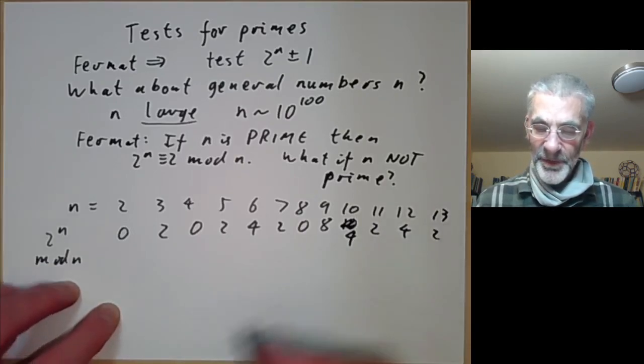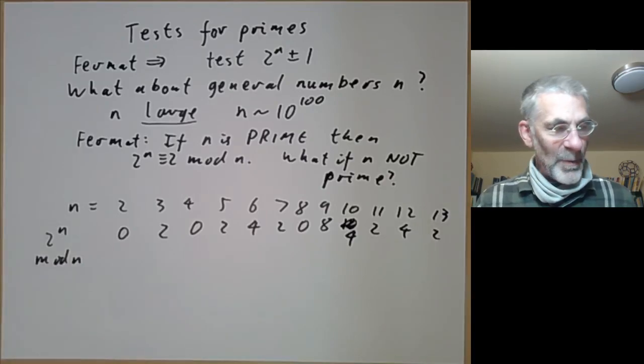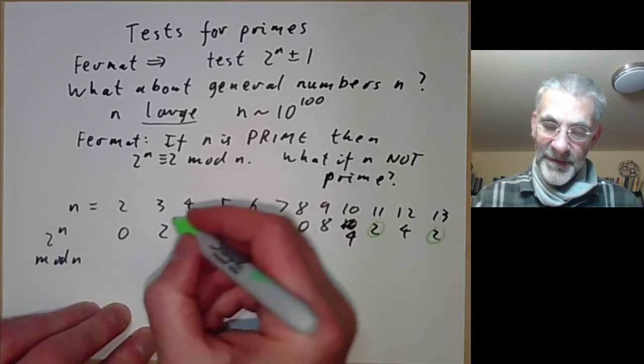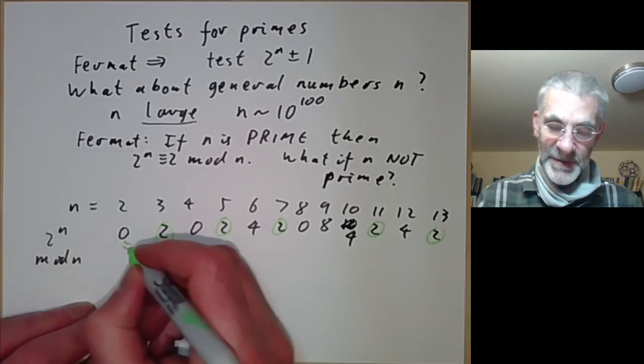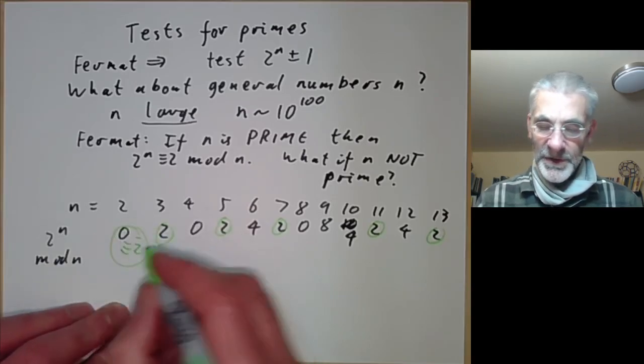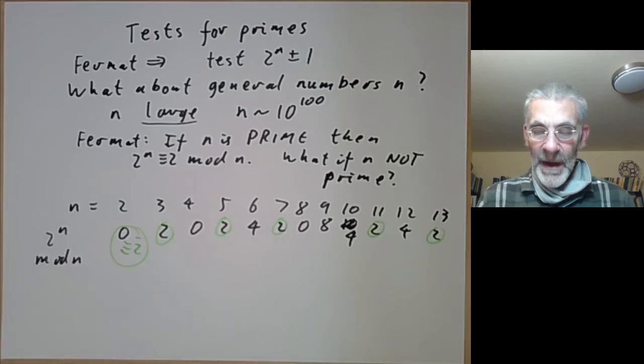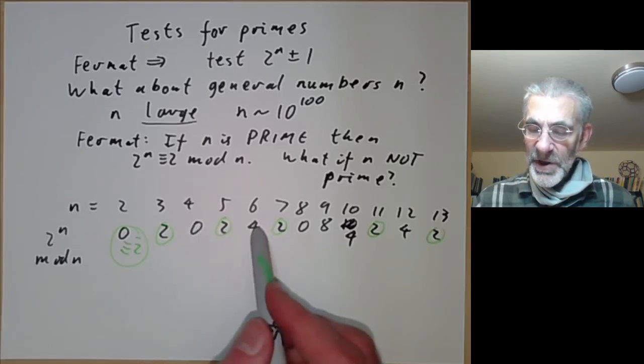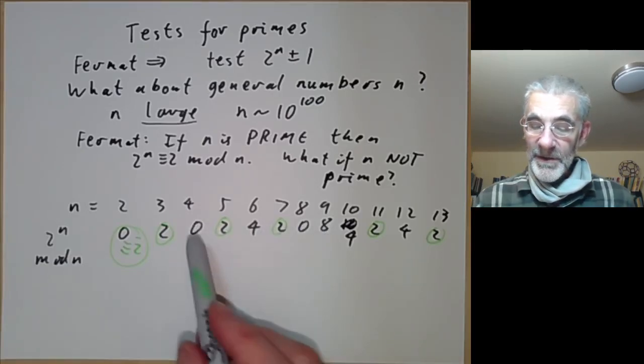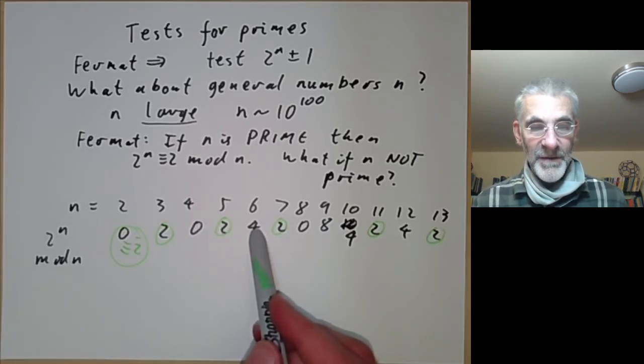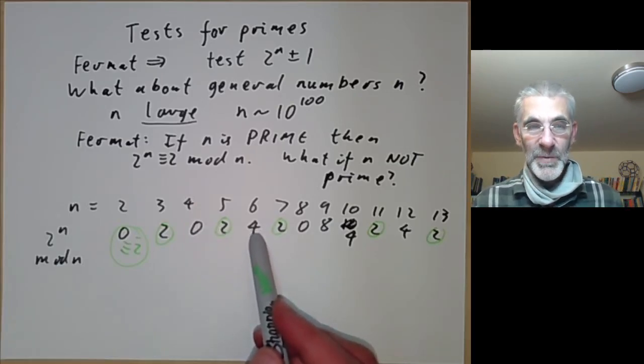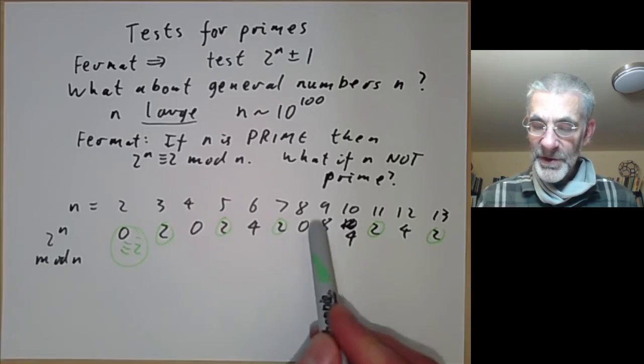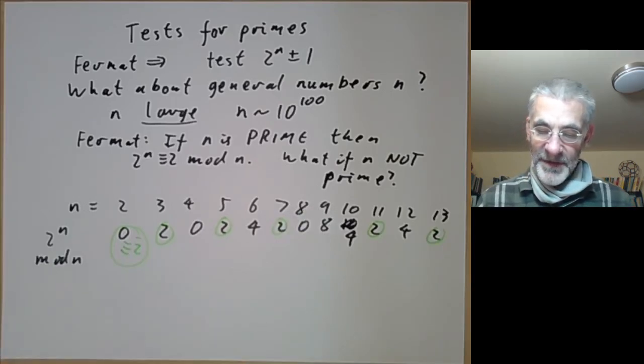And now you see that whenever n is prime, the result is 2, as predicted by Fermat's theorem. It isn't 2 there for n equals 2, but it actually is because 0 is congruent to 2 modulo 2, so that's OK. And we also see that if n isn't prime, then the result is usually not 2. Unfortunately it can sometimes be 2. But most of the time it's not equal to 2 if n is not prime.